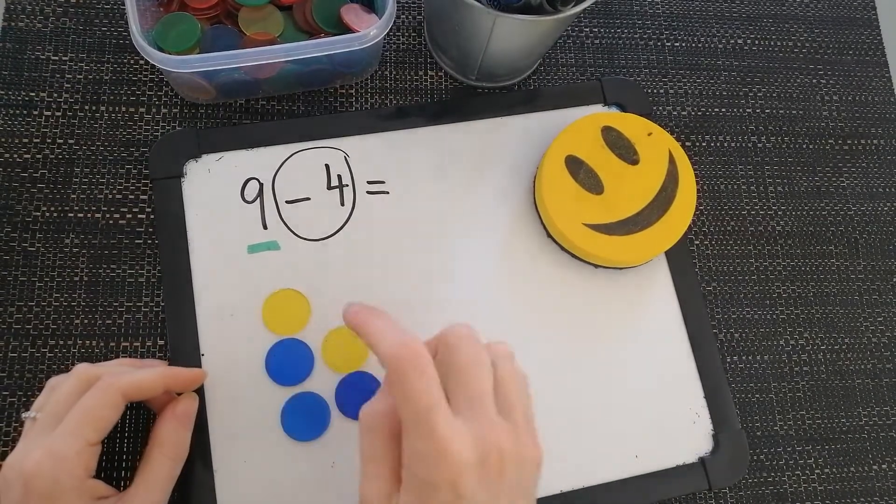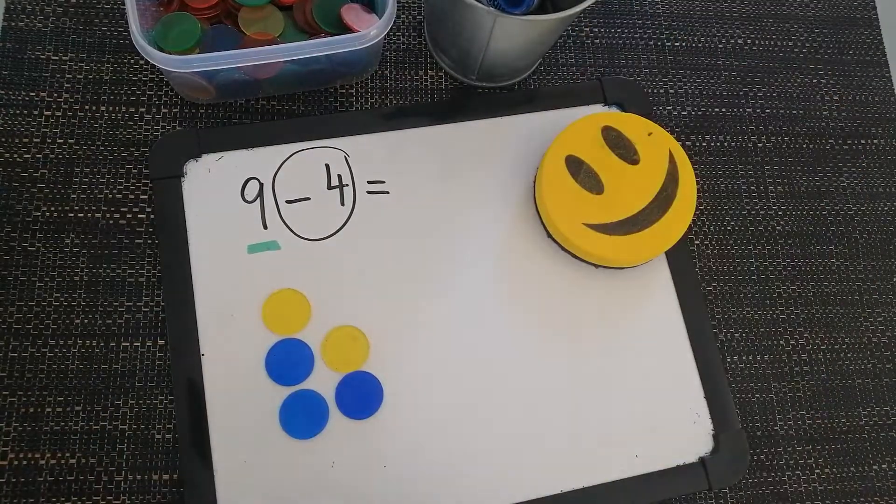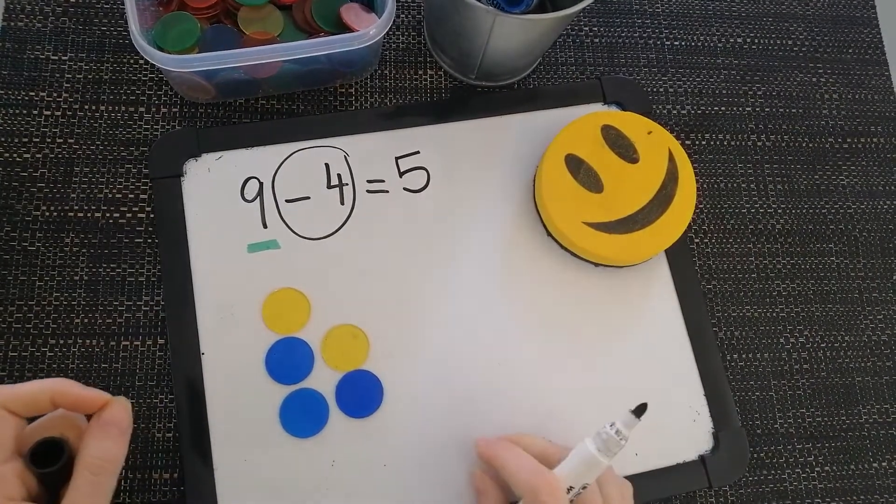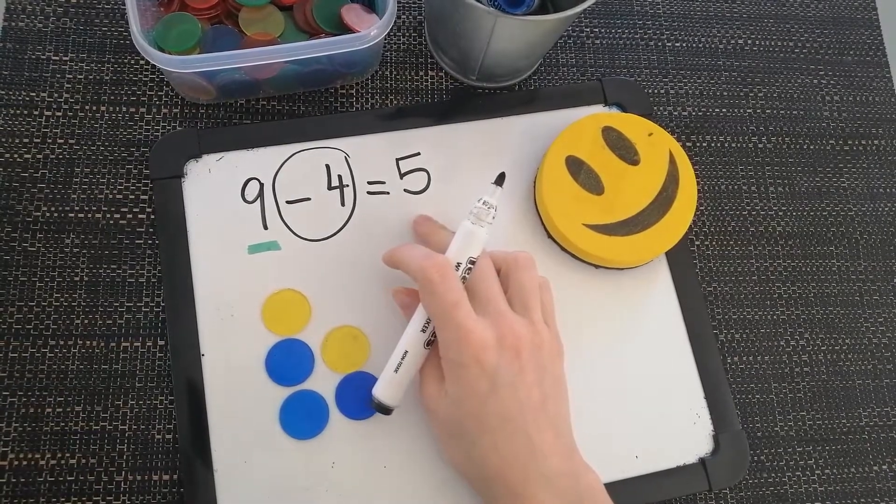Let's count. 1, 2, 3, 4, 5. 5 counters are left so my answer of 9 take away 4 is 5. One more.